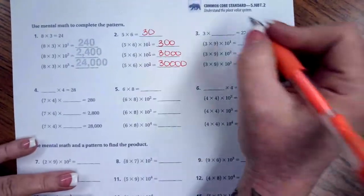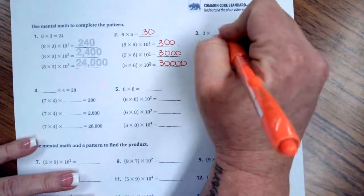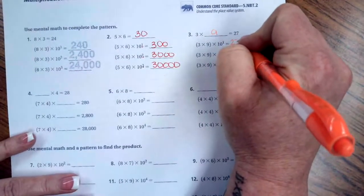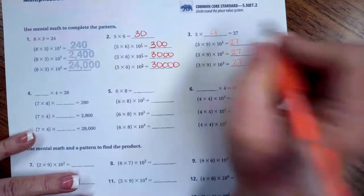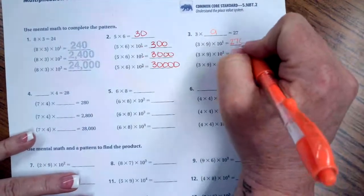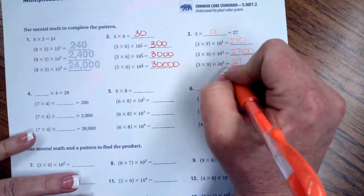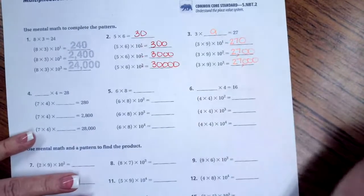Let's do number 3. 3 times what is 27? Well, this already tells you right here. So, 3 times 9 is 27. So now, 27 is going to be our base for all of these. The exponent is going to tell us how many 0's we need to add. We have 1 0, 2 0's, and 3 0's.